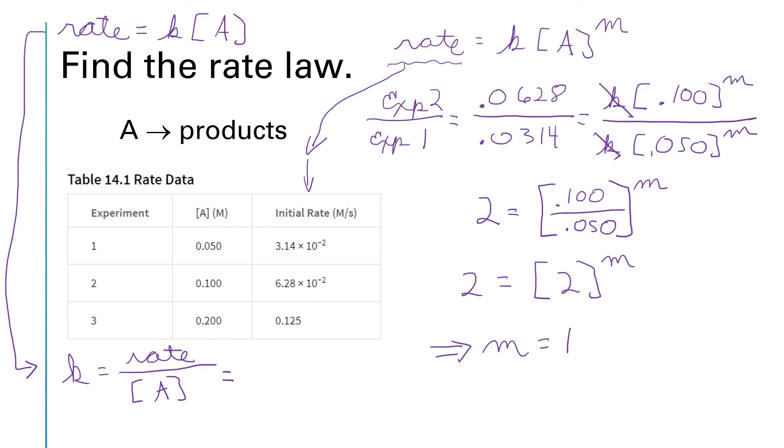Now we can take numbers from our data table, plug into this expression, and get a number for k. We could take the data from experiment one, we could take the data from experiment two, or we could take the data from experiment three. It doesn't matter. Since we've already used experiments one and two, let's pull the data from experiment three for this one. The rate according to experiment three is 0.125, and the concentration of A is 0.200.